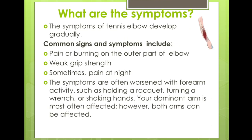What are the symptoms of tennis elbow? The symptoms develop gradually. Common signs and symptoms include pain or burning on the outer part of the elbow, weak grip strength, sometimes pain at night, and sometimes the pain radiates into the forearm, especially when the patient is performing repeated activities.